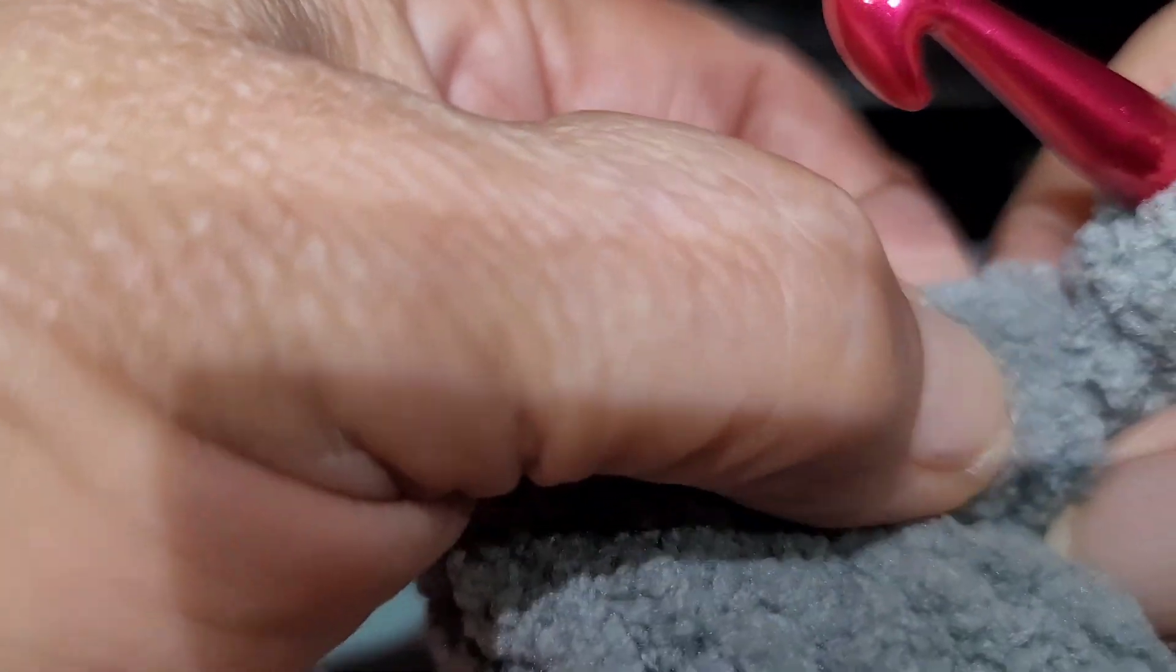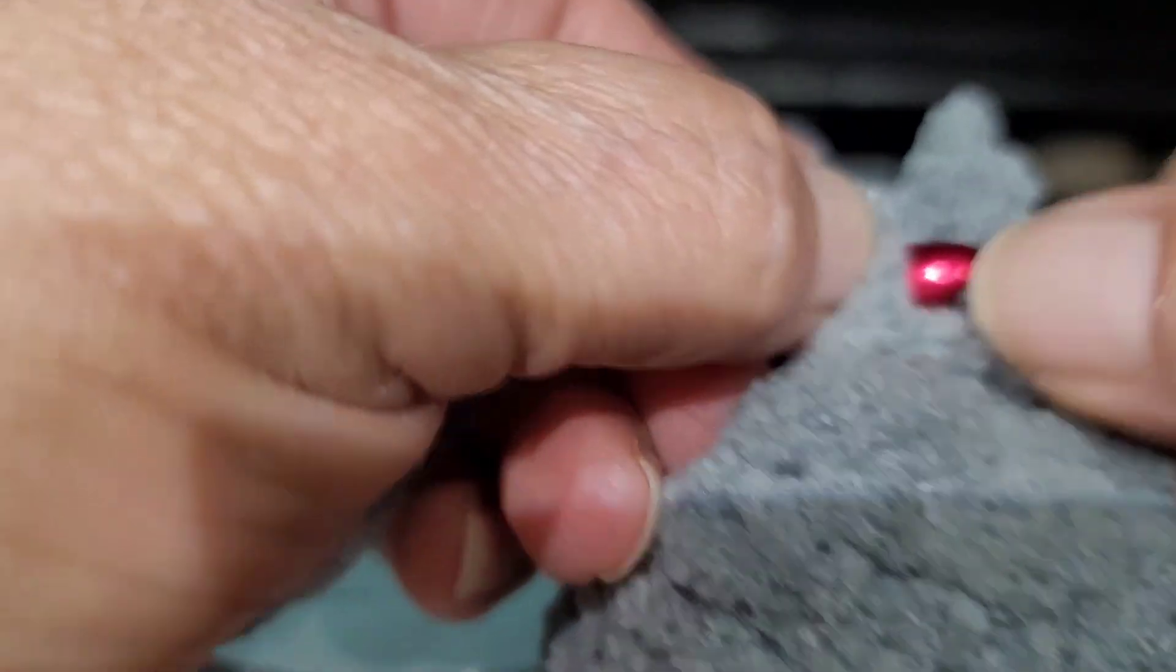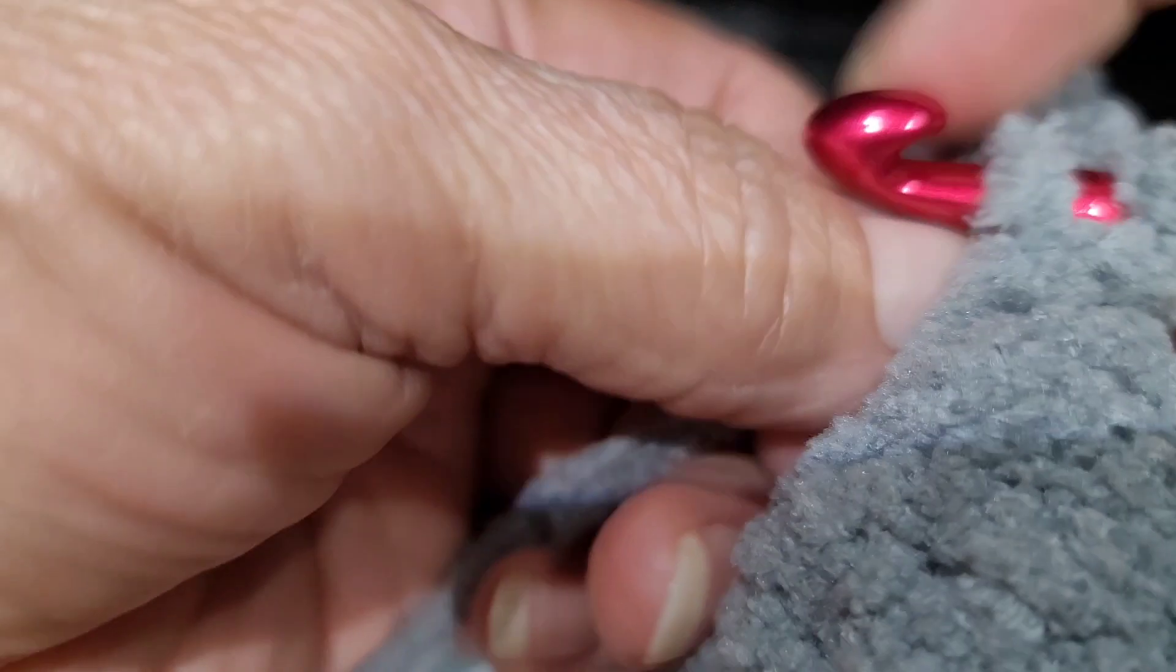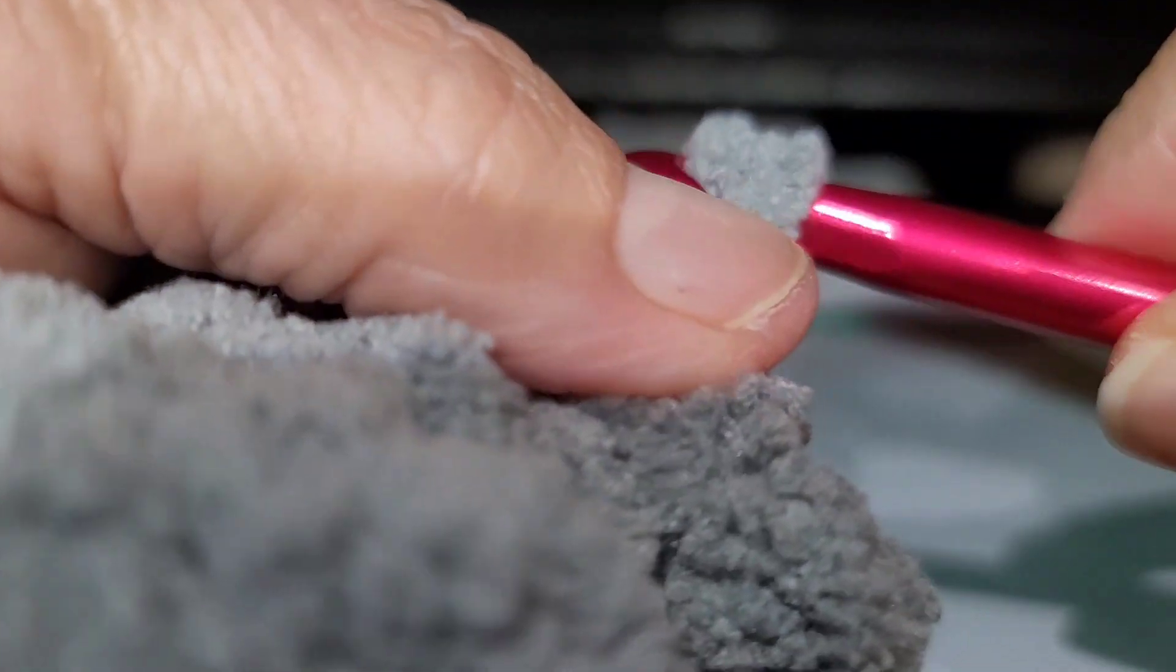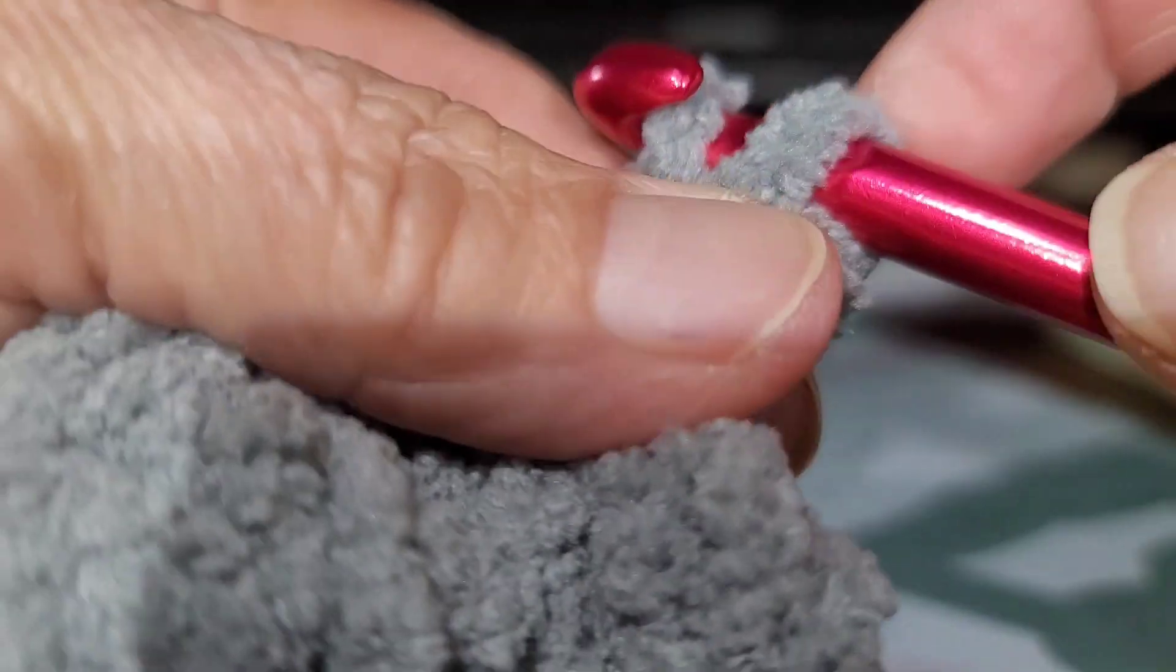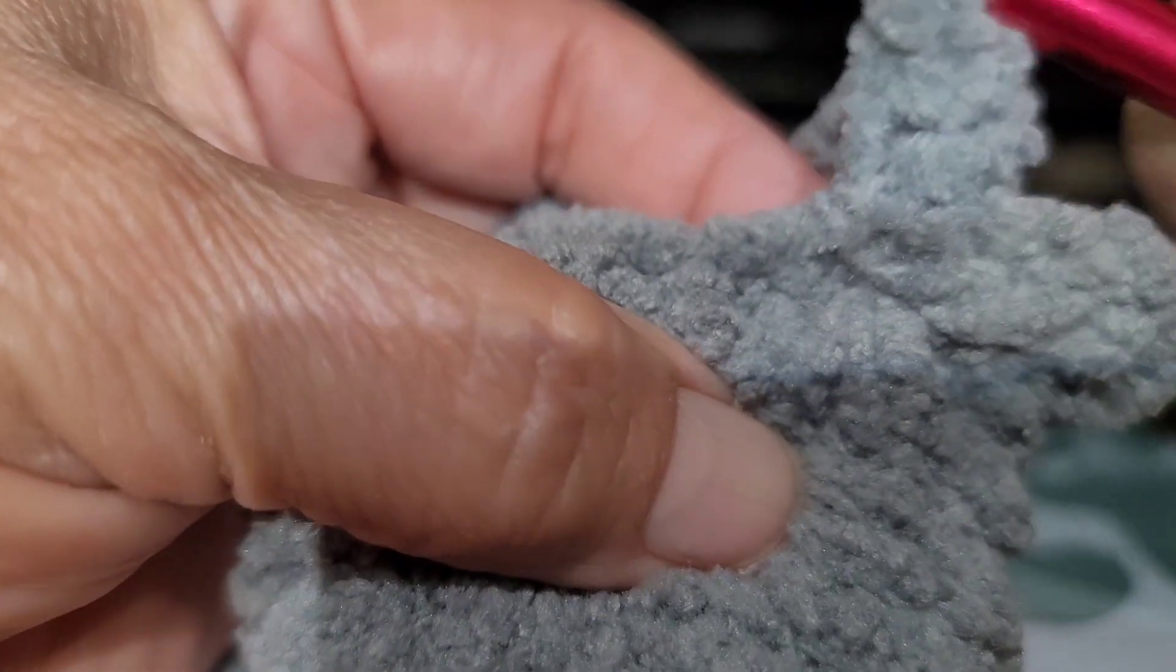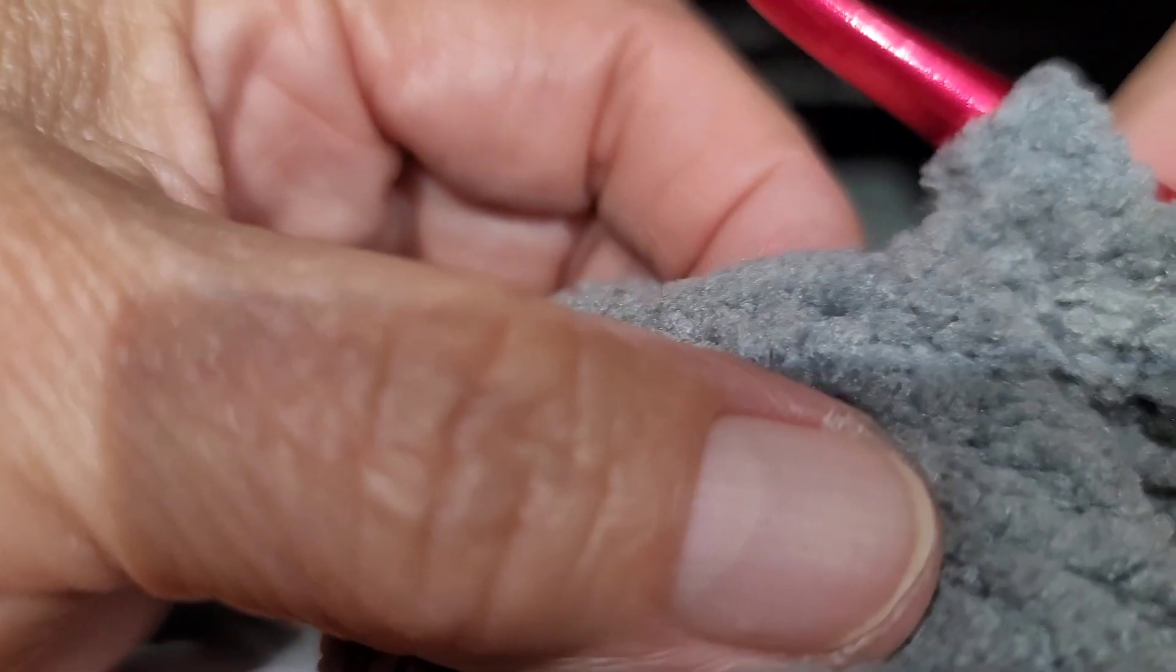Go to the next stitch. You can kind of feel it but you got to find the front loop. Slip stitch, chain two, one, two. Go back into your first one, slip stitch. You just pull it right through there and go back down where you started. Slip stitch in the bottom, pulling it right through the loop. You do that all the way around.